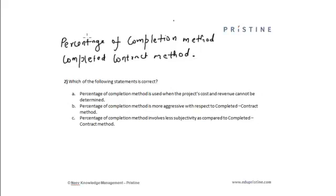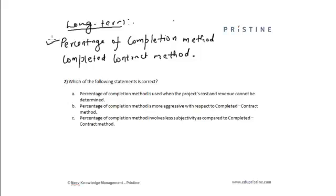When the outcome of a long-term project can be estimated with certainty, we use the percentage of completion method. Whereas if the outcome of a project cannot be estimated with certainty, or the project is of shorter duration, we use the completed contract method.